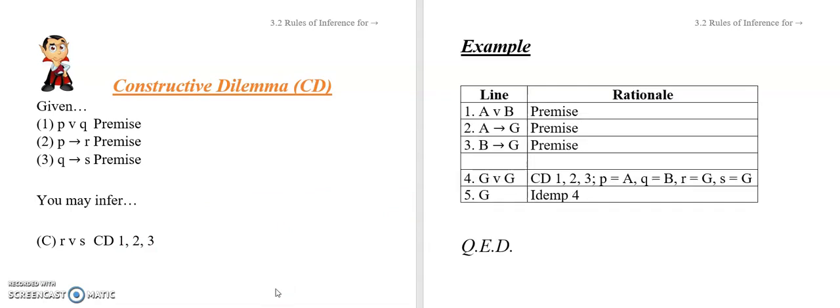Okay, so here's your example. Here's the premises, and then we use constructive dilemma to get G or G in this particular case. It's just R or S, but R and S happen to be the same thing in this case. So you get G or G, and then we can use our old rule from 3.1, idempotence, to go from G or G just to straight G by itself.